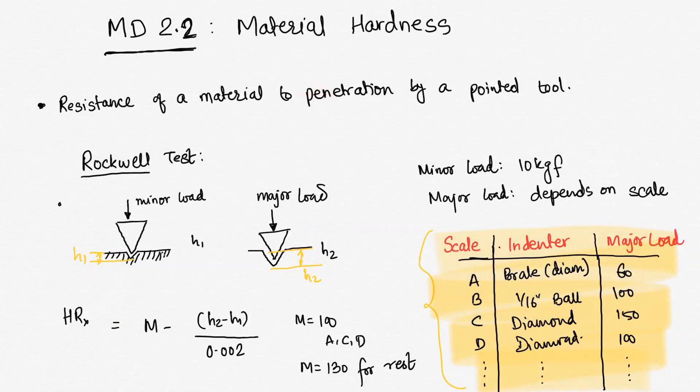For example, if I am using A scale, the indenter must be Brale type diamond indenter and major load will be 60 kg. If I use B scale, my indenter has to be a 1/16 inch ball type indenter and major load will be 100 kg.